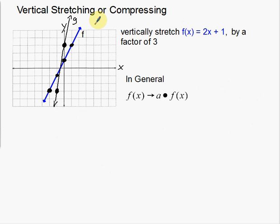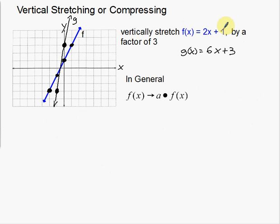Now let's write the rule for g of x. I need a slope and y-intercept. Using my two points, I get a slope of 6 and a y-intercept of positive 3. Comparing the two functions: 2x became 6x — that's just multiplying by 3. And 1 became 3 — also multiplying by 3. We took our function and multiplied the entire function by the factor. This is what we call a vertical stretch by a factor of a: g(x) = a · f(x).